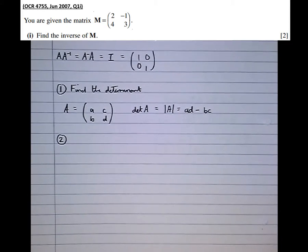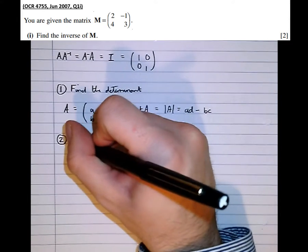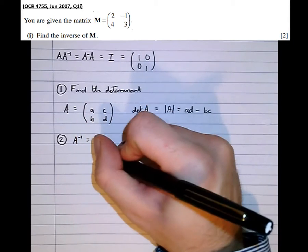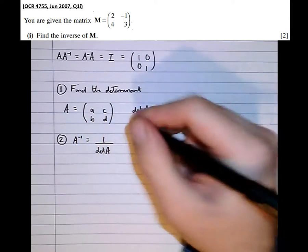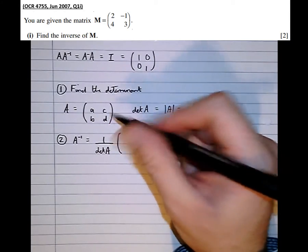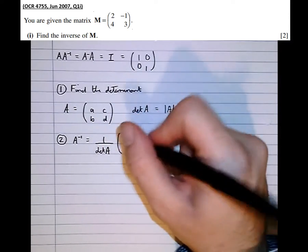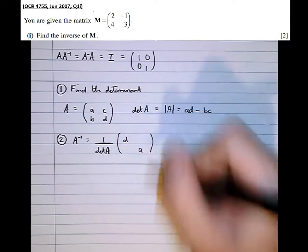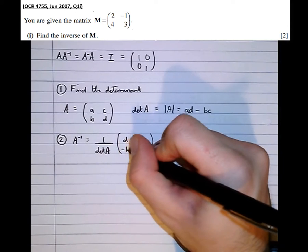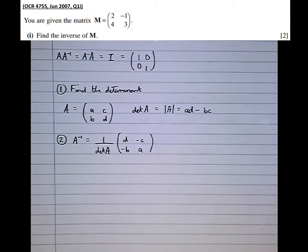Step 2 is relatively straightforward from here. The inverse of A is always equal to 1 over the determinant of A, times a matrix where we swap the diagonal elements A and D, and make the off-diagonal elements B and C the negatives of what they originally were. And there we have the inverse.